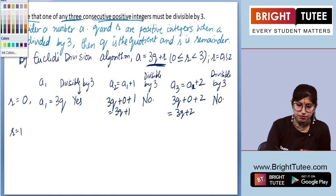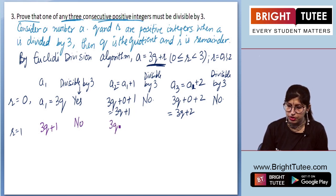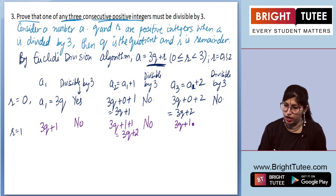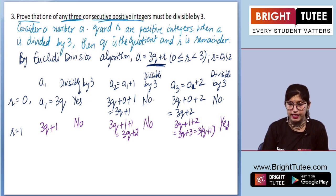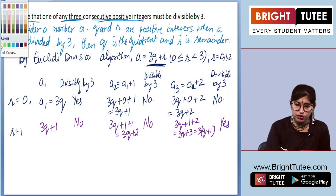When r equals 1, a1 equals 3q plus 1. Is it divisible by 3? No. Then a2 equals 3q plus 1 plus 1, which is 3q plus 2. Is it divisible by 3? No. Then a3 equals 3q plus 1 plus 2, which is 3q plus 3, or we can write it as 3 times (q plus 1). Is it divisible by 3? Yes. So when r equals 1, one of the three consecutive positive integers is divisible by 3.